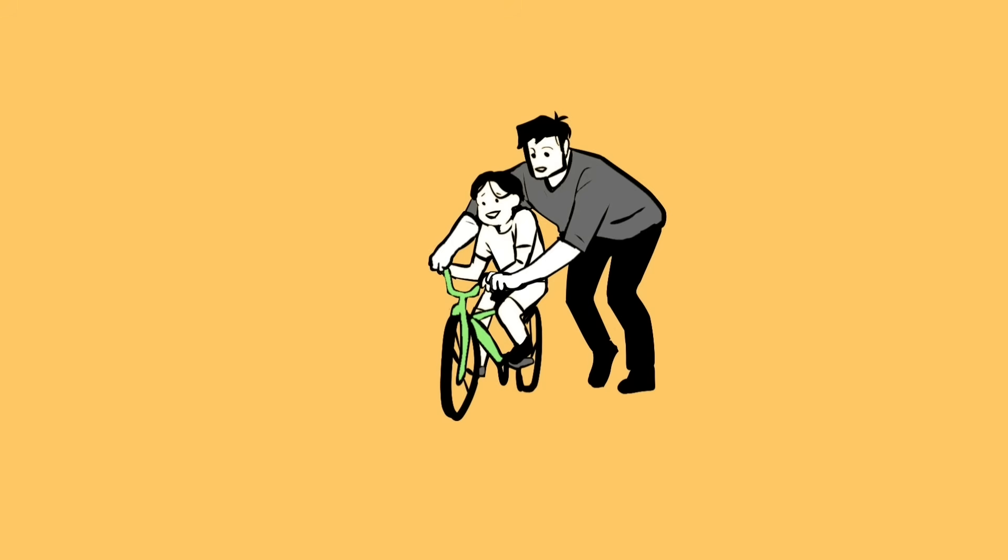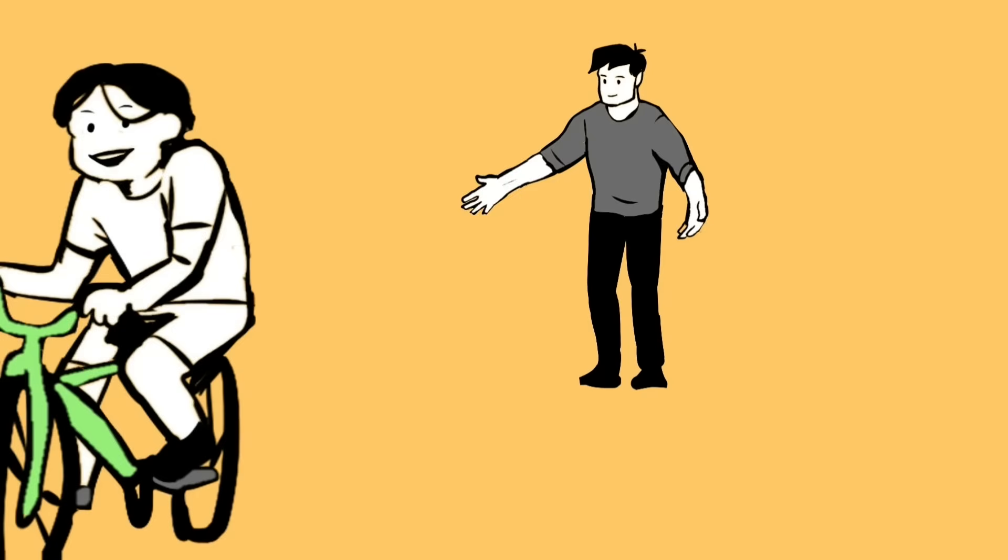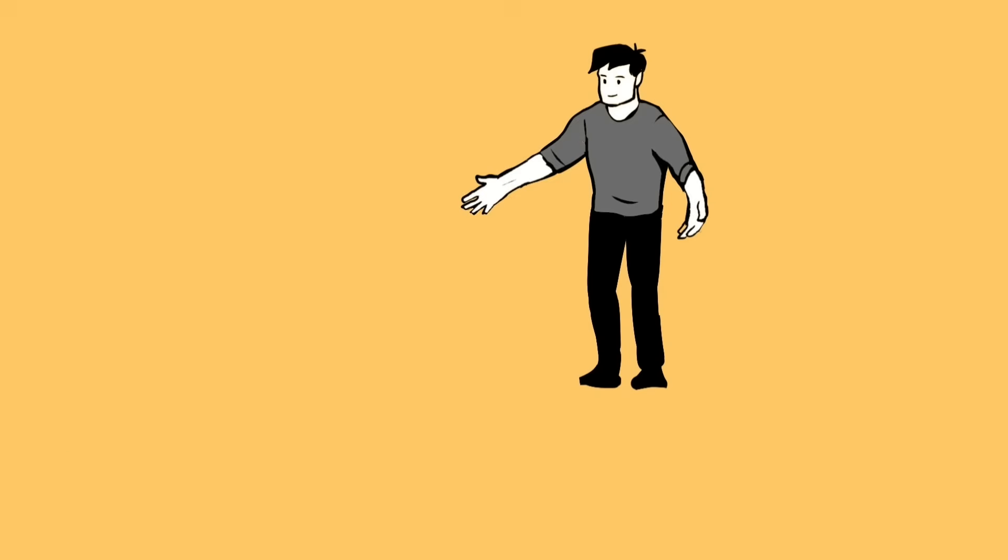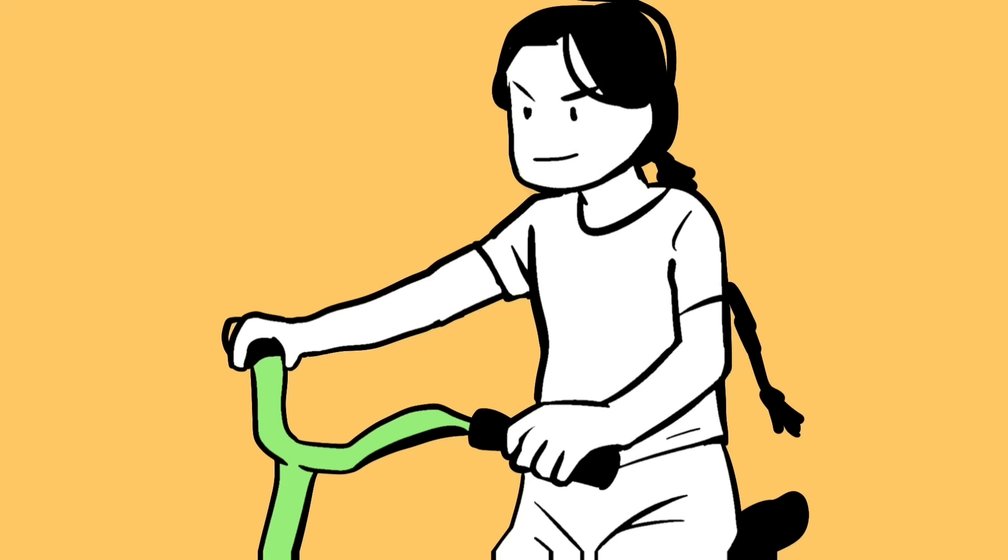Our parents might hold us steady while we pedal and the pressure is lifted while we trust they are helping. When they let go without us knowing, we're able to successfully ride the bike on our own due to the reduction of pressure and no longer overthinking the situation.